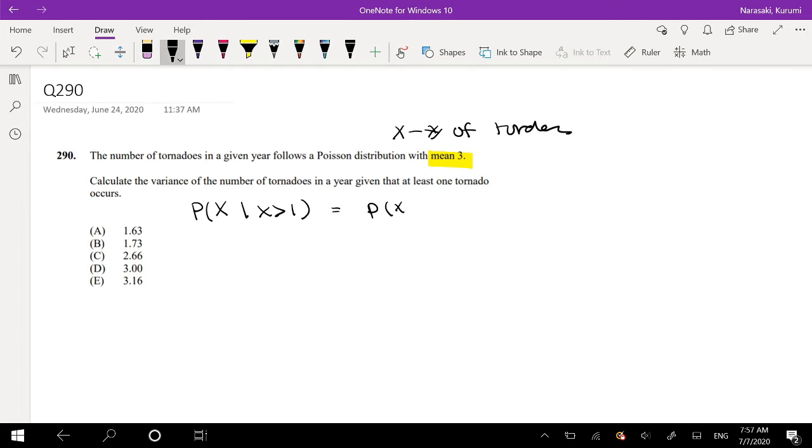Well, this is equal to the probability of X and X is greater than 1, over the probability that X is greater than 1. Or, I'm going to think of it as the complement, 1 minus P of X equals 0. And for this one, it will still be the same. So this is what we're looking for.